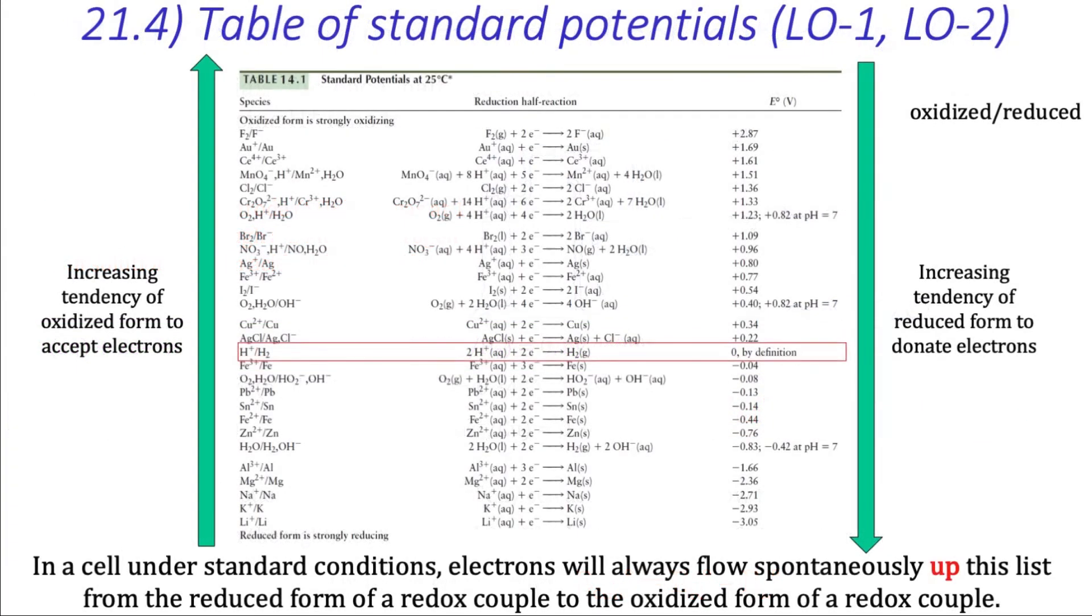In this list, the half-cells are organized in order of decreasing reduction potential. So as we go up the list, the oxidized species in each redox pair has a stronger and stronger tendency to accept electrons and thus become reduced.